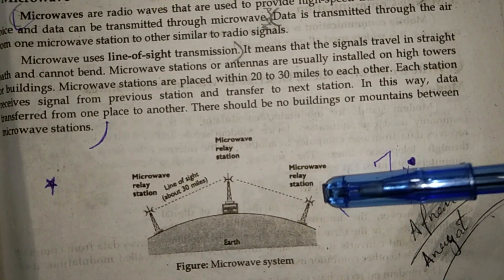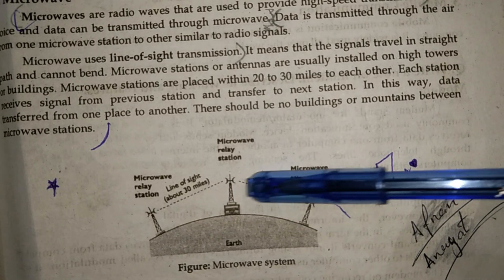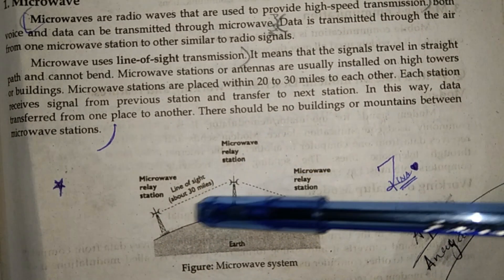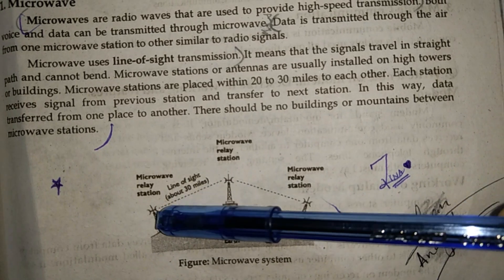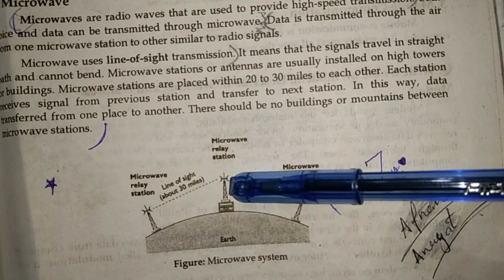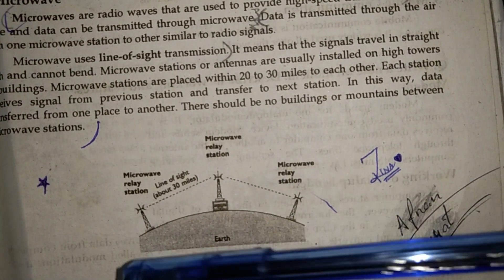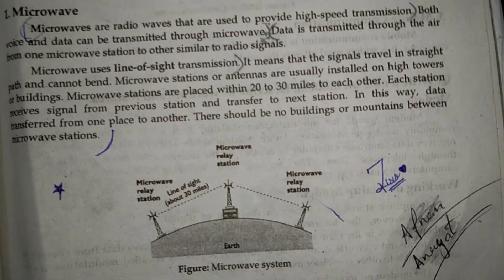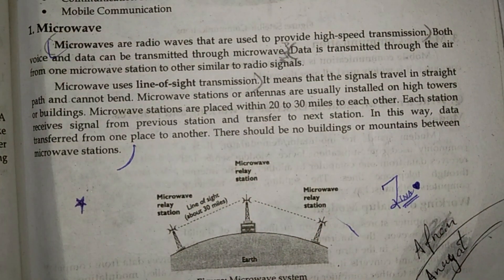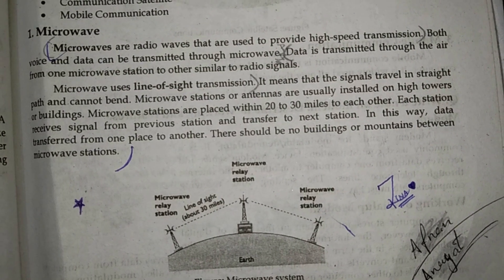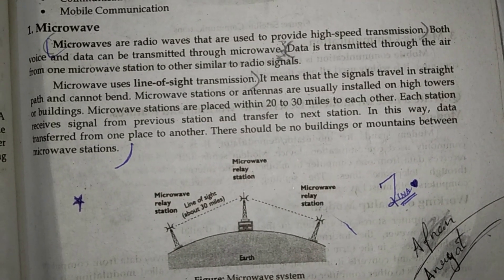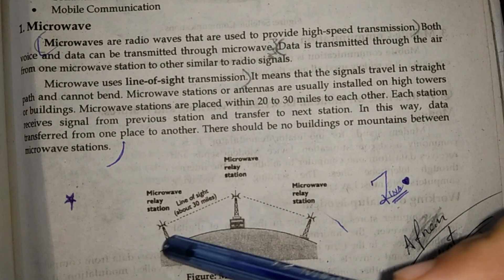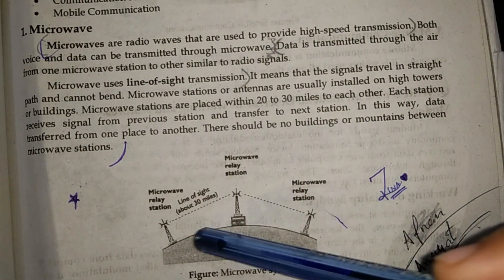The diagram shows the Earth with three microwave stations. The dotted lines represent radio signals traveling between them across the world. Signals travel in a straight path and cannot bend — they are always sent in a straight, forward direction and not bent.